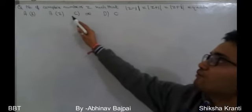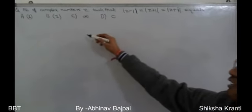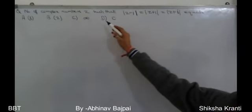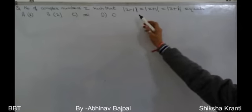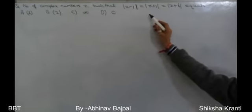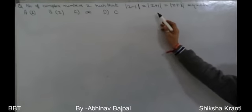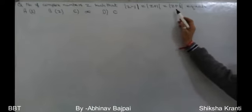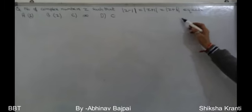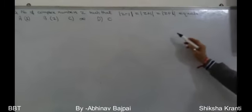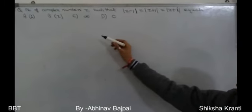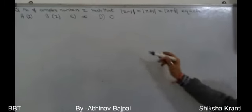This is a problem from complex numbers. The question is: find the number of complex numbers z such that |z - 1| = |z + 1| = |z + i|. The options are 1, 2, infinite, and 0.